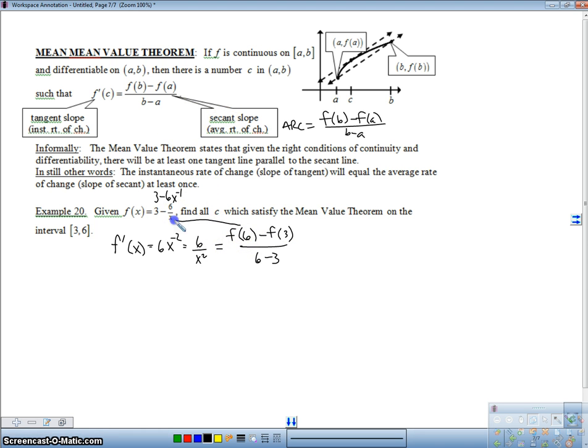So, I'm going to put 6 into here. And I'm going to get, looks like I'm going to get 3 minus 1, which is 2, minus 3 minus 2, which is 1, over 3. And that's going to give me 1 third. So, my slope of my secant line is 1 third.